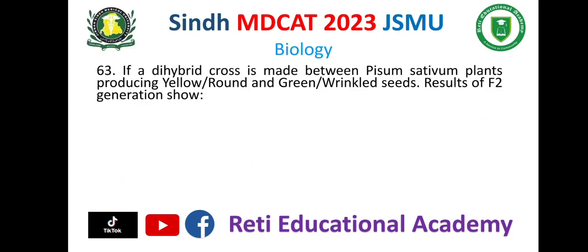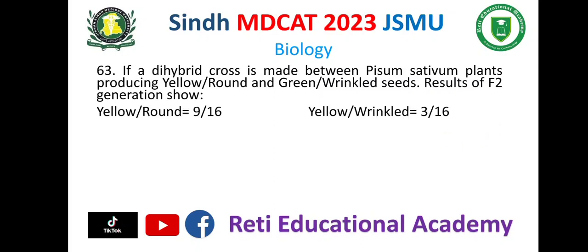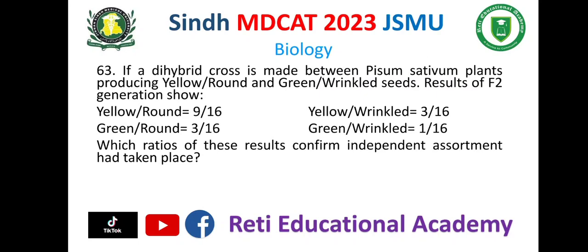Question number 63. If a dihybrid cross is made between Pisum sativum plants producing yellow round and green wrinkled seeds, results of F2 generation show: yellow round 9/16, yellow wrinkled 3/16, green round 3/16, green wrinkled 1/16. Which ratio confirms independent assortment had taken place? A. 1/16. B. 3/16. C. 9/16. D. 3/16. And the correct option is B.